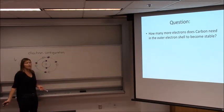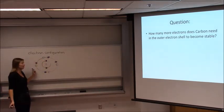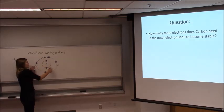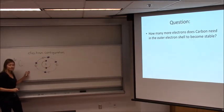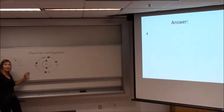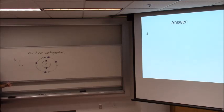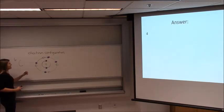How many more electrons does carbon need to have a full outer shell? There are four empty spots, so the correct answer is four. Carbon needs four more electrons to become stable. Remember, every atom needs a full outer shell to be stable. So now things start getting exciting — carbon is going to need to do something to fill that shell.